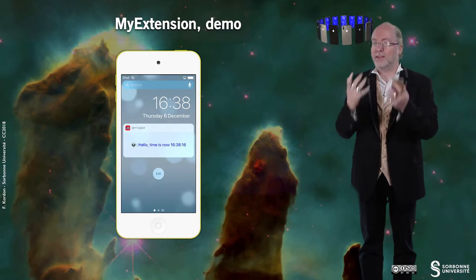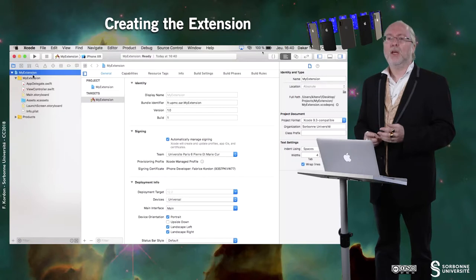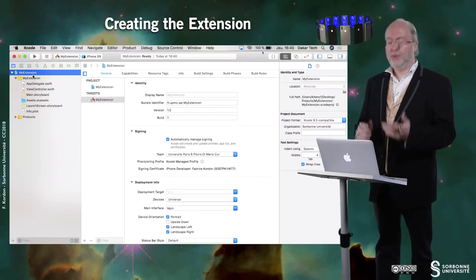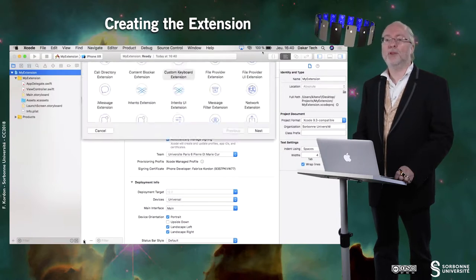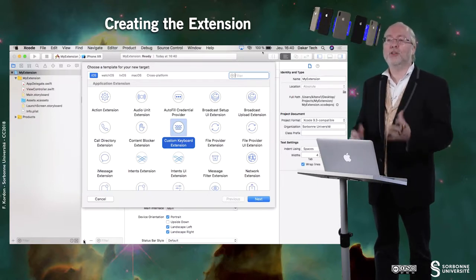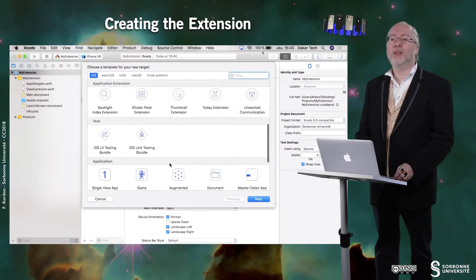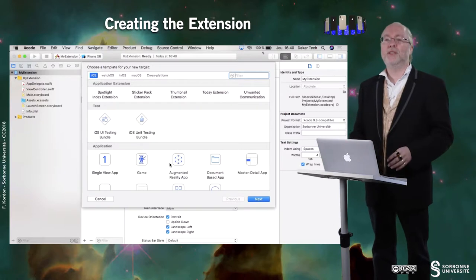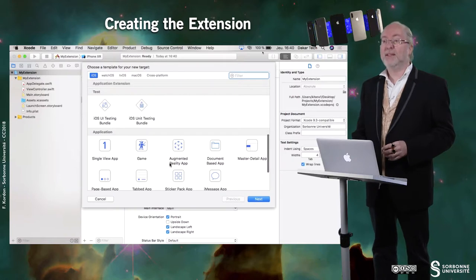The first thing to do when you want to create an extension associated to an application is to create a new target. You create a new target by tapping on the plus button here. It will propose you a lot of targets — all the possible extensions and things you can have, including unit testing. You can even create new applications because you can have several applications in the same project.